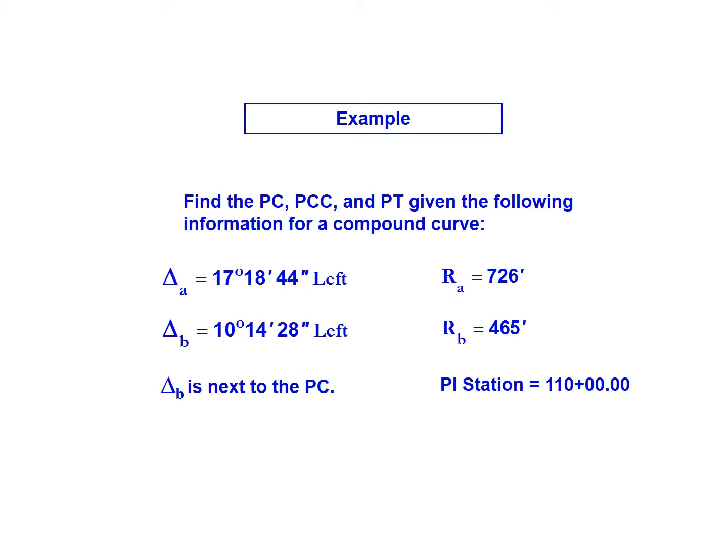We're told that curve A has a radius of 726 feet and turns to the left at a deflection angle of 17 degrees, 18 minutes, 44 seconds. Curve B has a radius of 465 feet and has a deflection angle of 10 degrees, 14 minutes, 28 seconds, again to the left. We're also told that delta B, or curve B, is next to the PC.